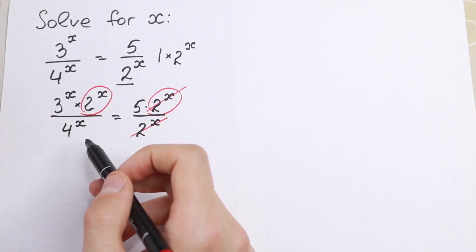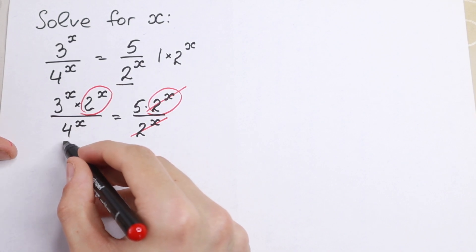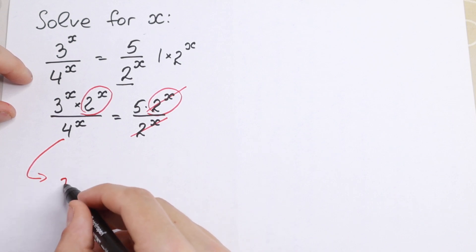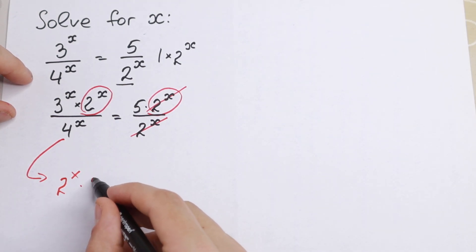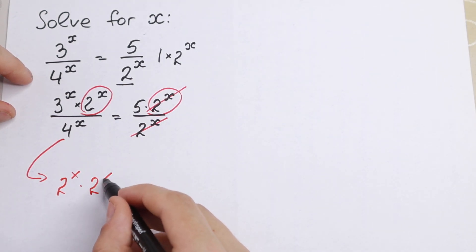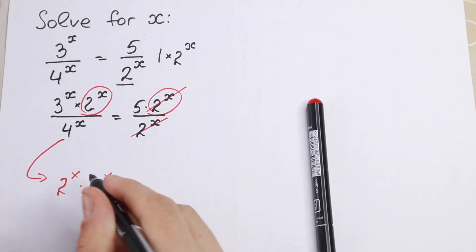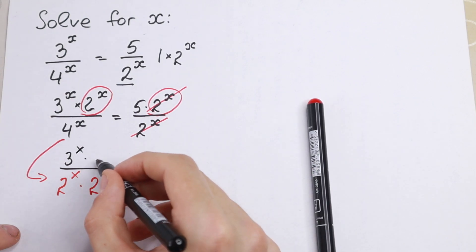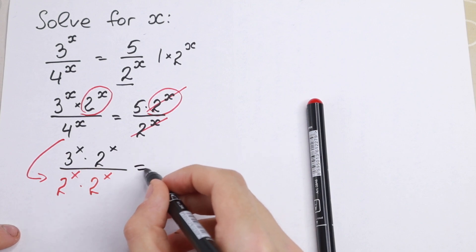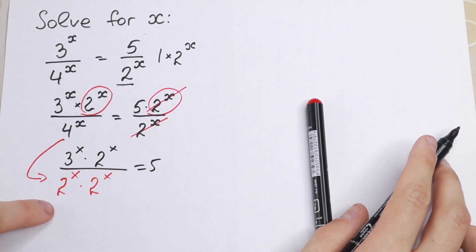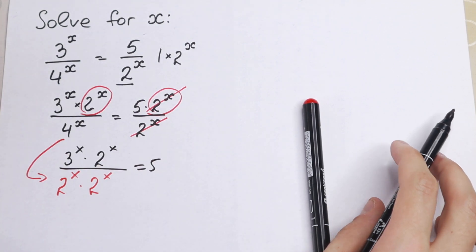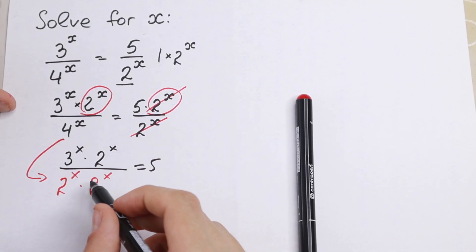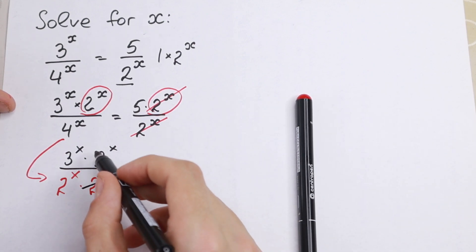Right here we can rewrite 4 to the power x as 2 to the power x times 2 to the power x. So the denominator will have 3 to the power x times 2 to the power x, equal to 5. We just rewrite 4^x as 2^x times 2^x, and right now we can easily cancel this 2 to the power x, because they are the same.